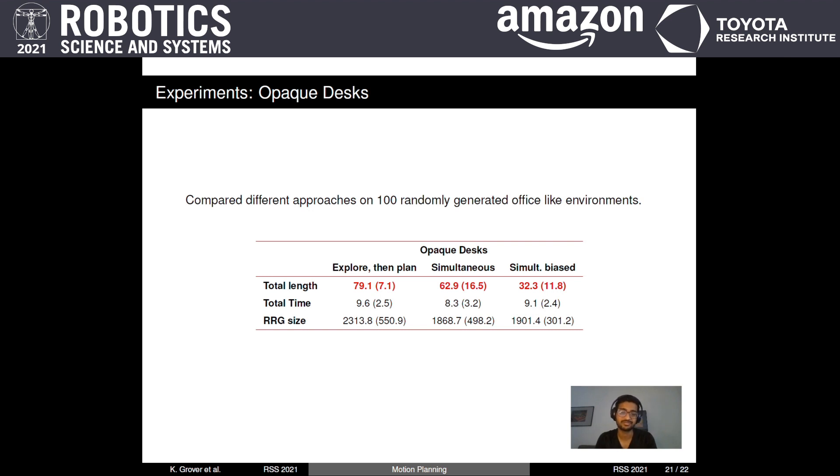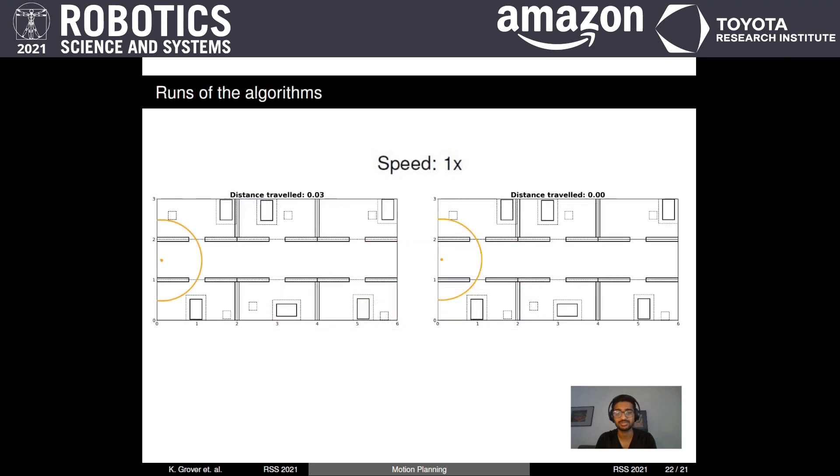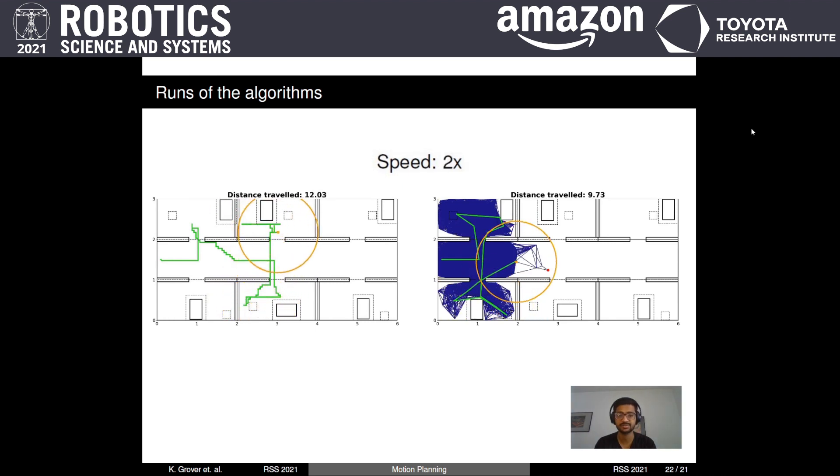We will now see a run of the first and the third approach side by side. On the left side, we see a run of the sequential approach which corresponds to the first column of the table shown in the last slide. Here, the robot is currently doing just exploration of the environment and it moves only vertically and horizontally because of the grid involved in frontier exploration methods.